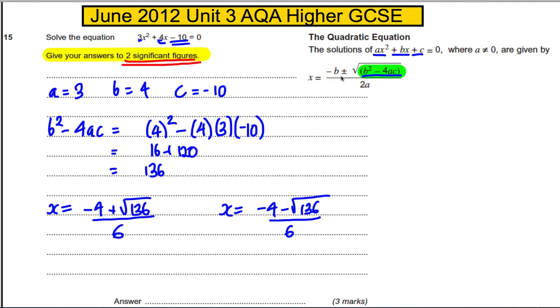And then it's just a calculator exercise to type these in your calculators and make sure you give them to two significant figures. So what we'd have is -4 plus square root of 136, all of that—make sure you put brackets around that...